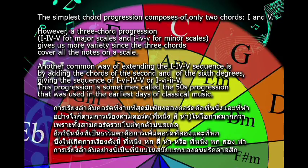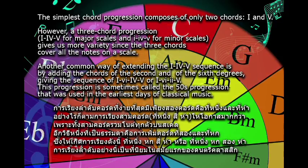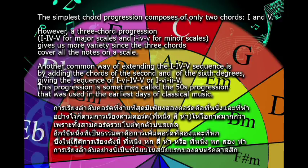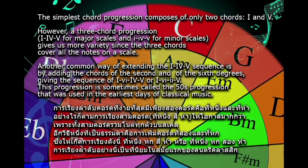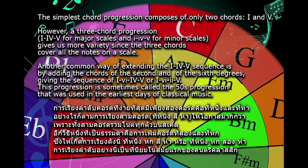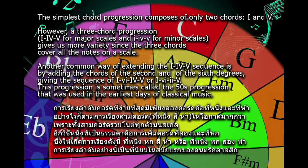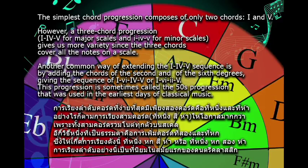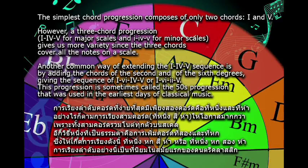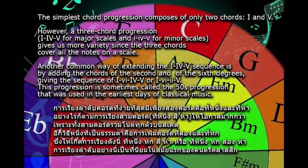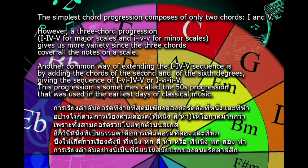Another common way of extending the first-fourth-fifth sequence is by adding the chords of the second and sixth degrees, giving the sequence of first-sixth-fourth-fifth, or first-sixth-second-fifth. This progression is sometimes called the 'Fifties progression,' used in the earliest days of classical music.